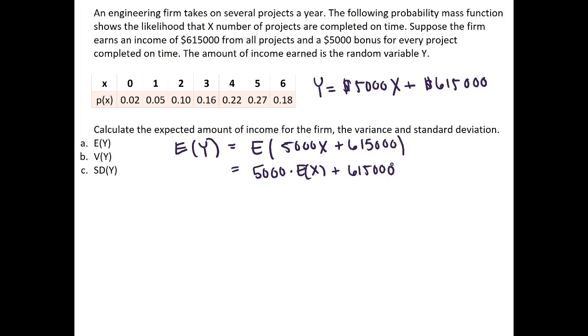Which is really nice because it can be verified that the expectation of X is equal to 4.04. So 5,000 times 4.04 plus 615,000 is equal to a total of 635,200.